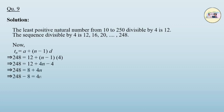After solving, we get the equation as 4n is equal to 240. Therefore, n becomes 60. Hence, 60 numbers are divisible by 4.